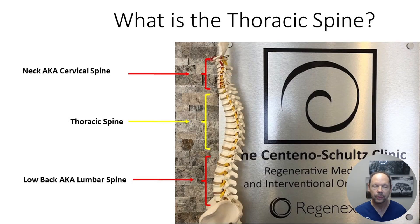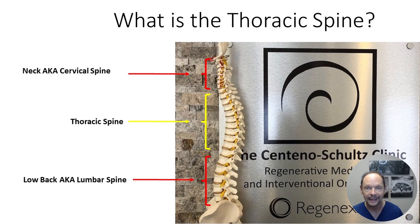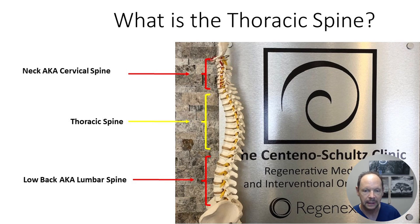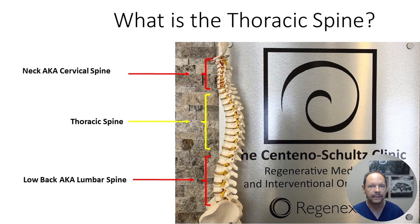The thoracic spine is that section of the spine that's below the neck and above the low back — that middle section depicted here. Sometimes people refer to it as the mid-back, and it's a very important section of the spine that is often dismissed and poorly understood.